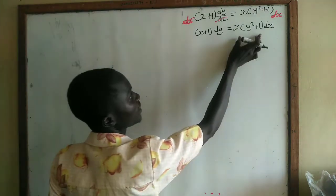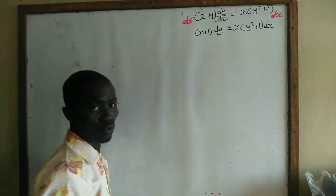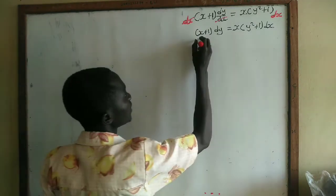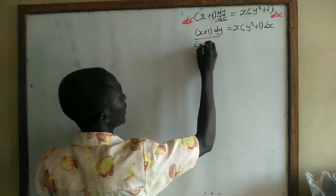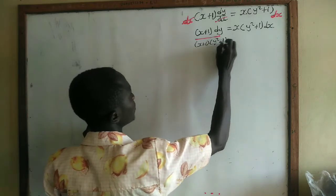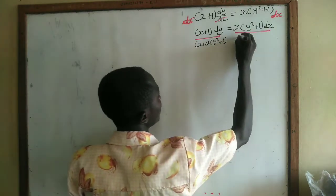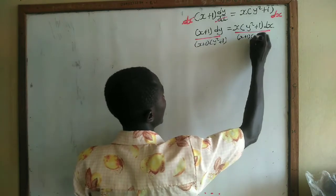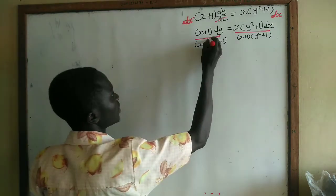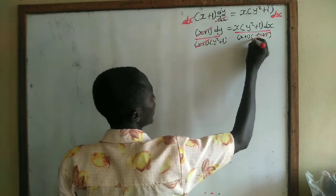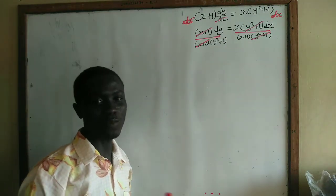Now we are separating the variables — y² + 1 should come to one side and x + 1 should go to the other. We divide both sides by (x + 1)(y² + 1), so that x + 1 cancels with x + 1 and y² + 1 cancels with y² + 1. We have separated the variables.